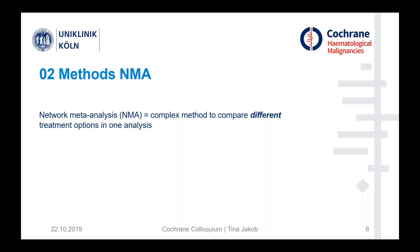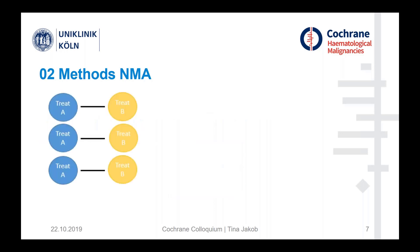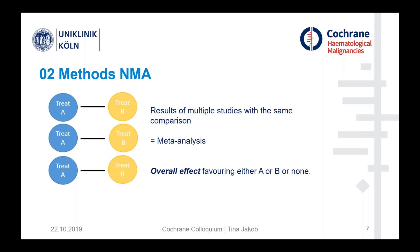Network meta-analysis is a very complex method to compare different treatment options in one analysis, and the aim is to generate a hierarchy of treatment options. Most of you are probably familiar with the concept of a normal meta-analysis, where we compare two treatment options through studies. In this case we have three studies comparing the same treatment options A and B, and we calculate an overall effect, with the result favoring either treatment A, treatment B, or neither of the two.